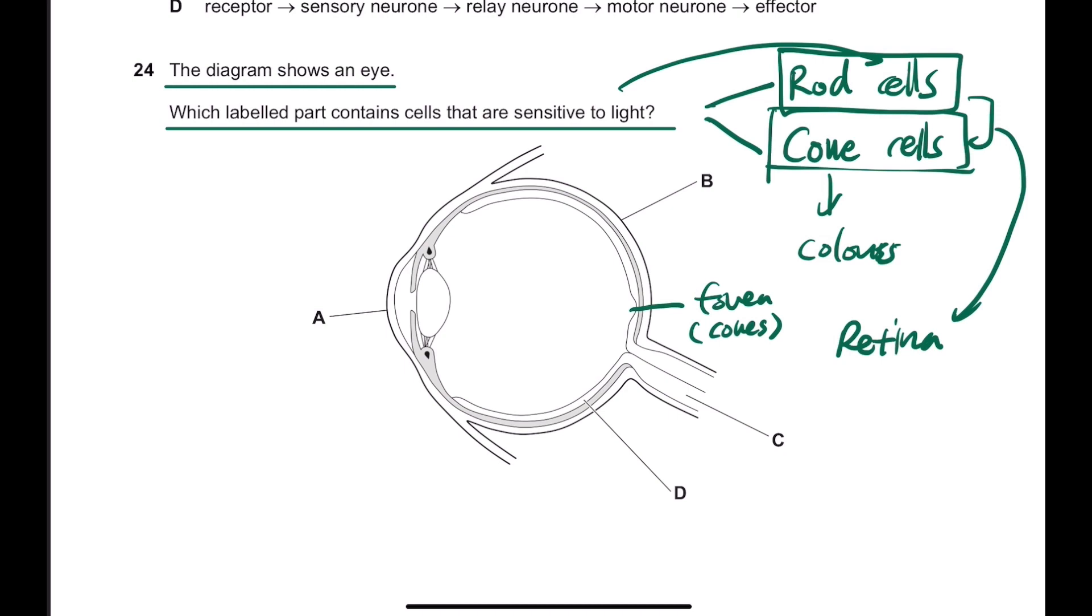So the answer here is D, because the inner part, this part is called retina, and it contains both rod cells and cone cells. So the answer is D.